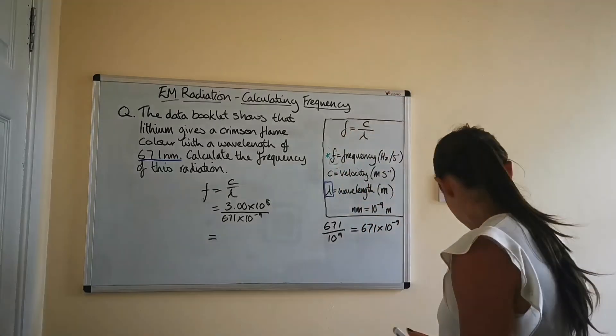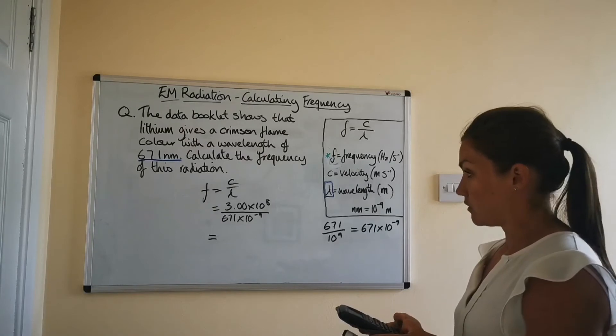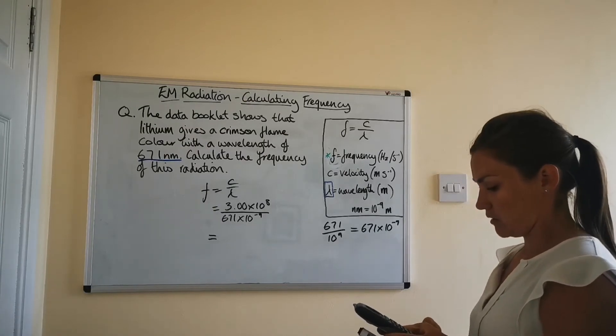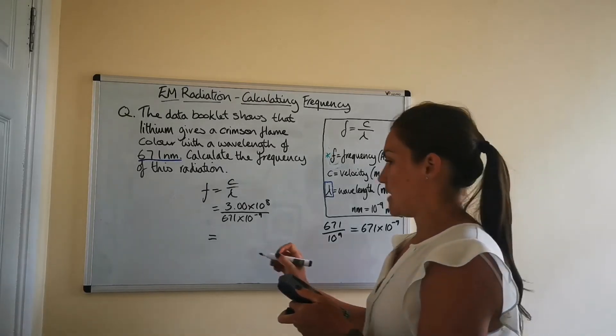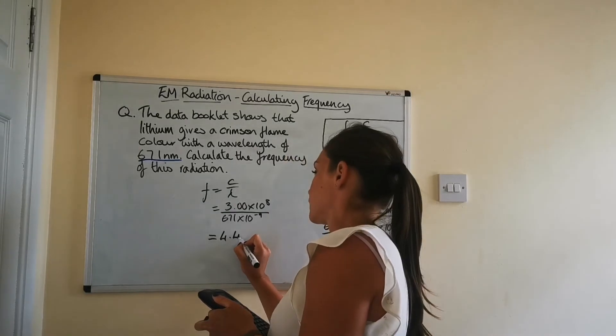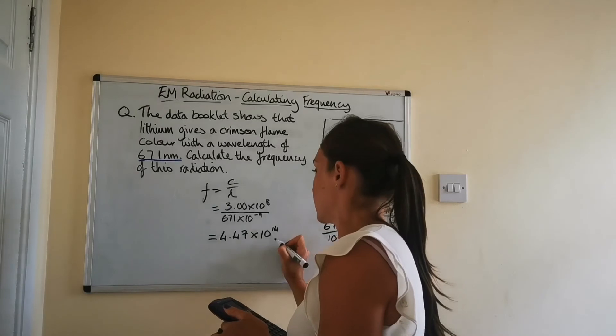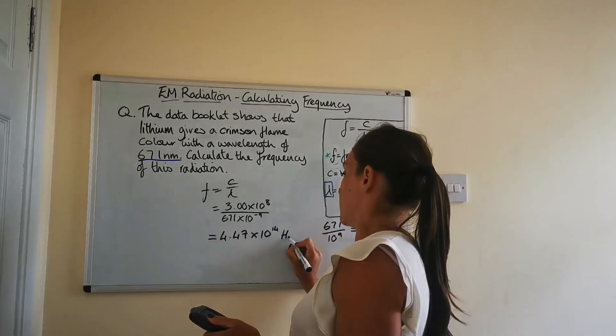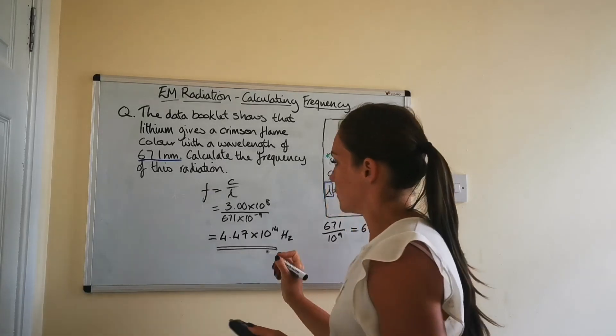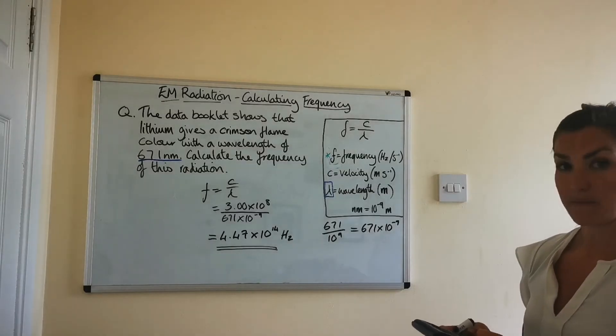So then plug that into my calculator, and you'll get a really big scientific notation number here, so this comes out as 4.47 times 10 to the power of 14. And the units for frequency are hertz, so that's the frequency of the light that's emitted when we burn lithium.